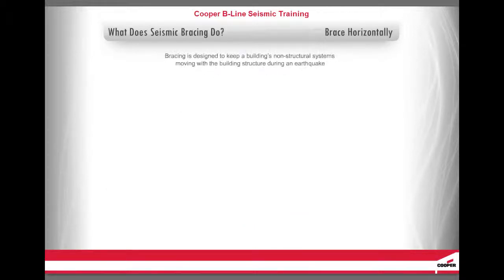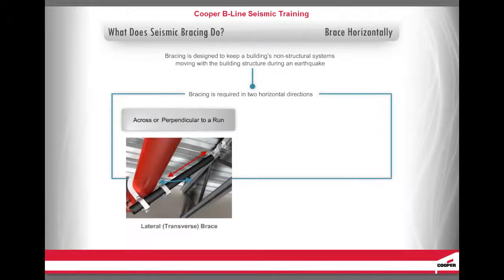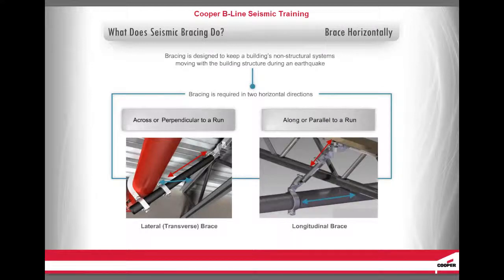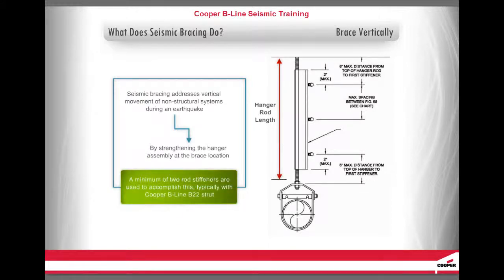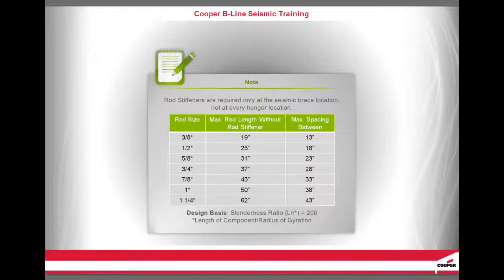Bracing is designed to keep a building's non-structural systems — such as pipe, air duct, or cable tray — moving with the building structure during an earthquake. Bracing is required in two horizontal directions: across or perpendicular to a run, and along or parallel to a run. Seismic bracing also addresses vertical movement by strengthening the hanger assembly at the brace location, using a minimum of two rod stiffeners, typically Cooper B-Line B22 strut. Rod stiffeners are required only at the seismic brace location, not at every hanger location.